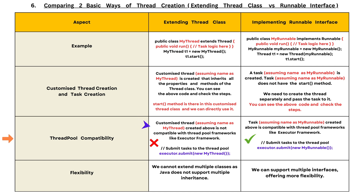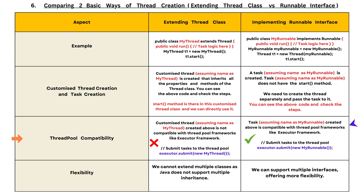The third difference is thread-pool framework compatibility. When extending the Thread class, the customized thread myThread is not compatible with thread-pool frameworks like the Executor framework. When implementing the Runnable interface, the task myRunnable is compatible with thread-pool frameworks like the Executor framework. You will get better understanding once we cover the Executor framework in later videos.